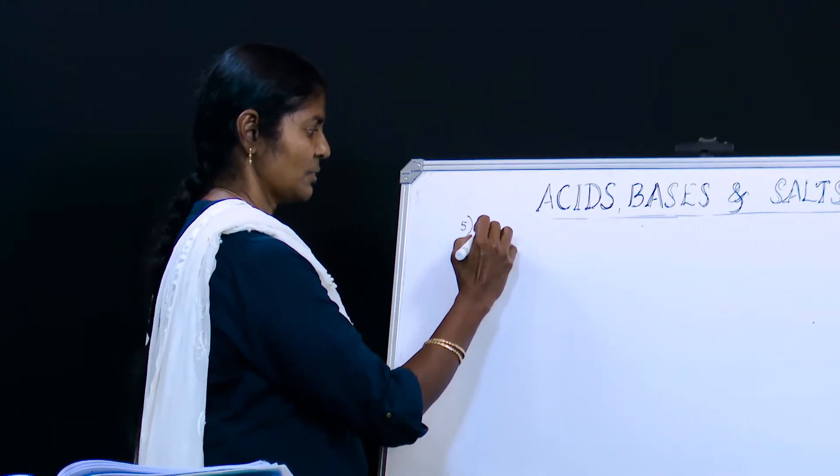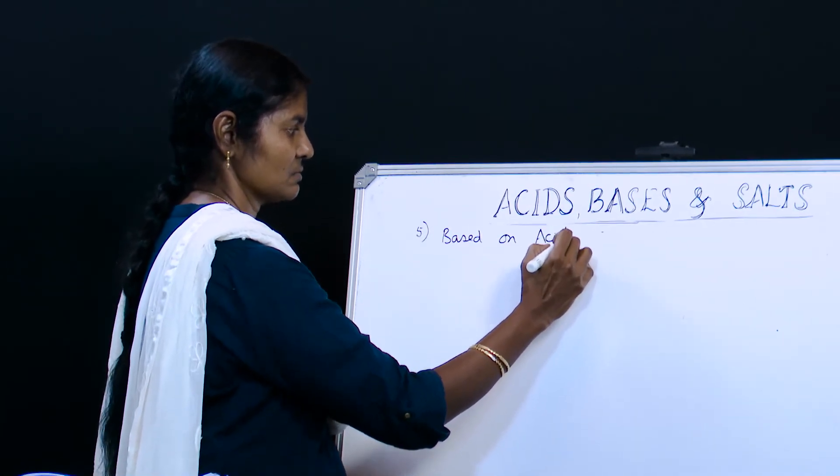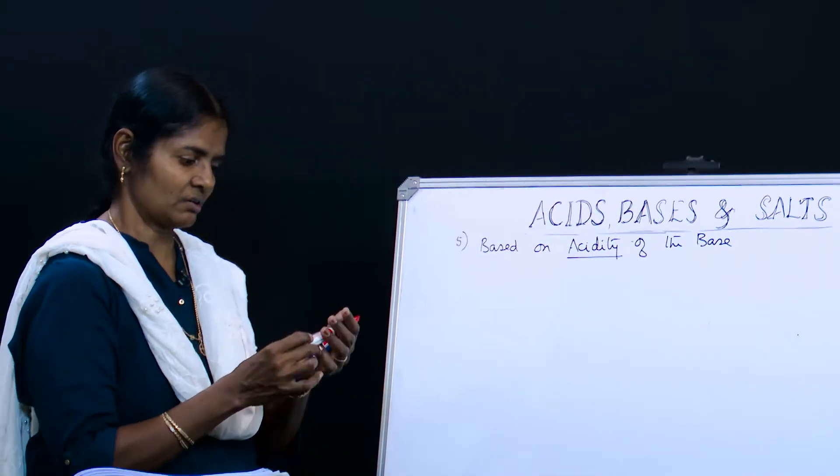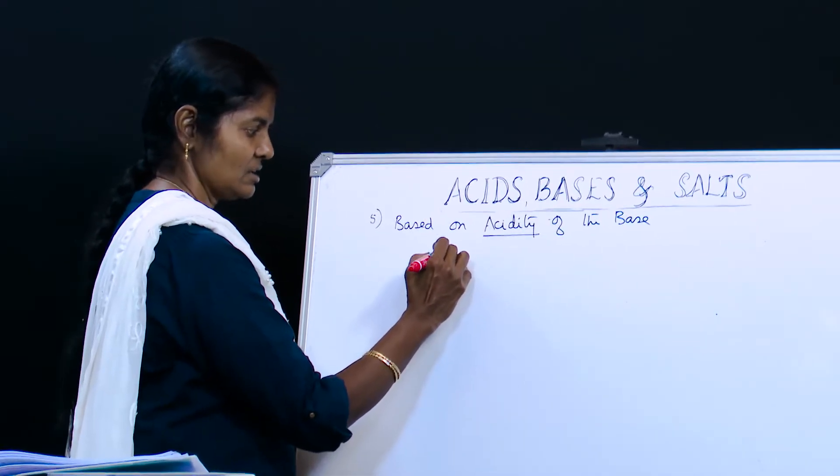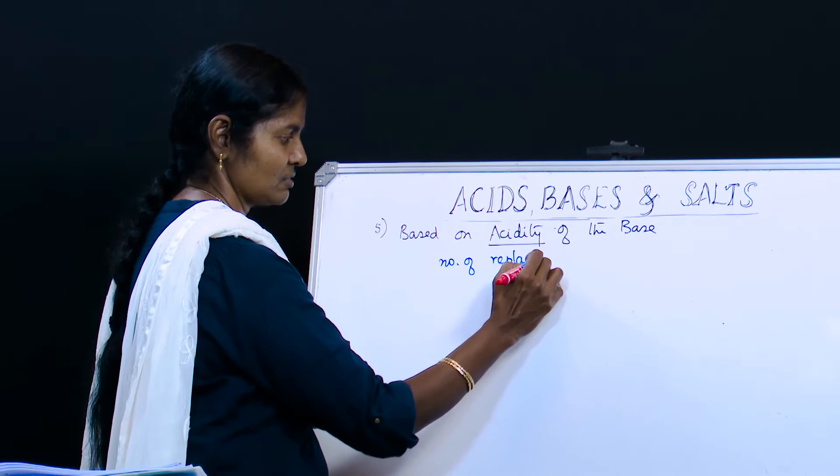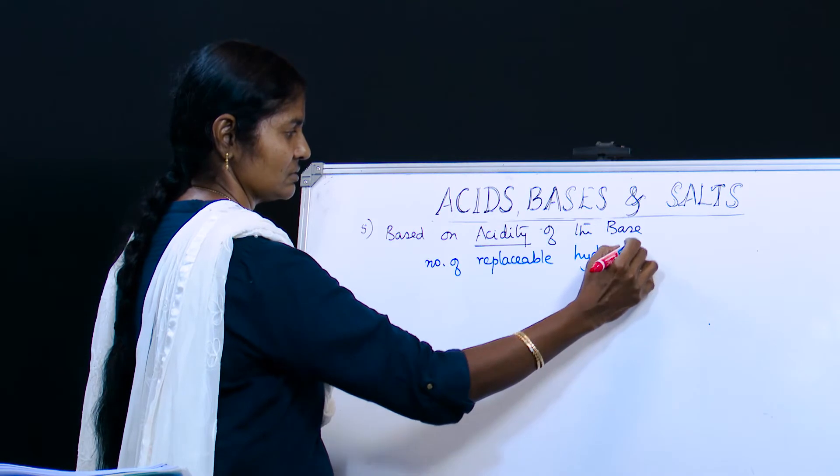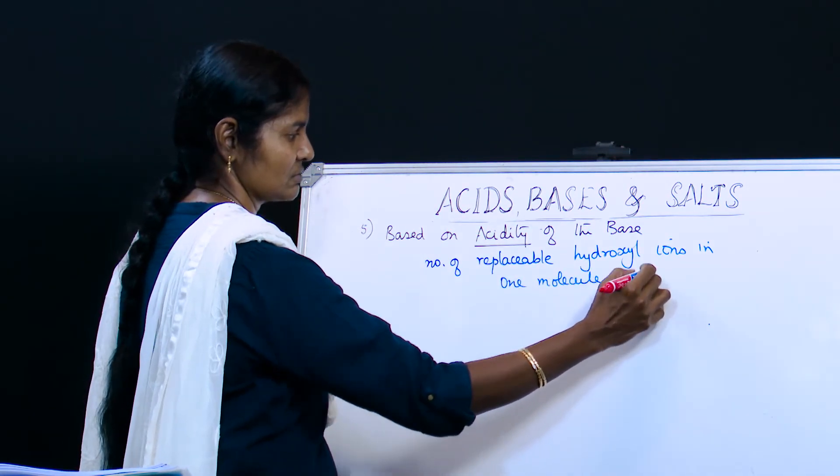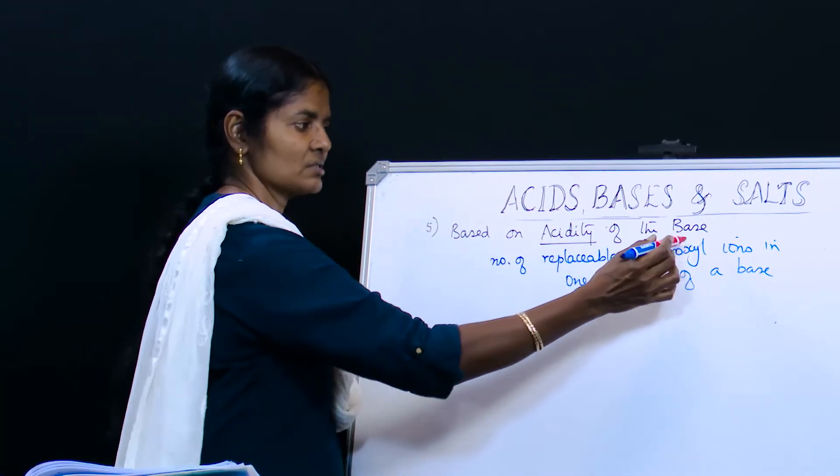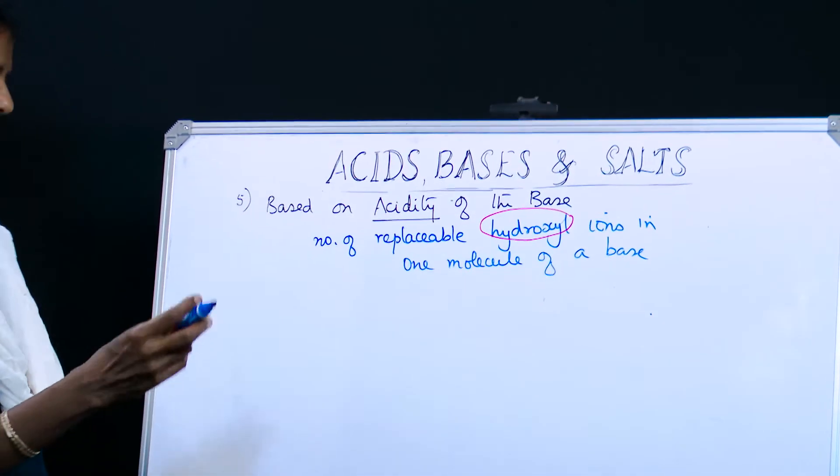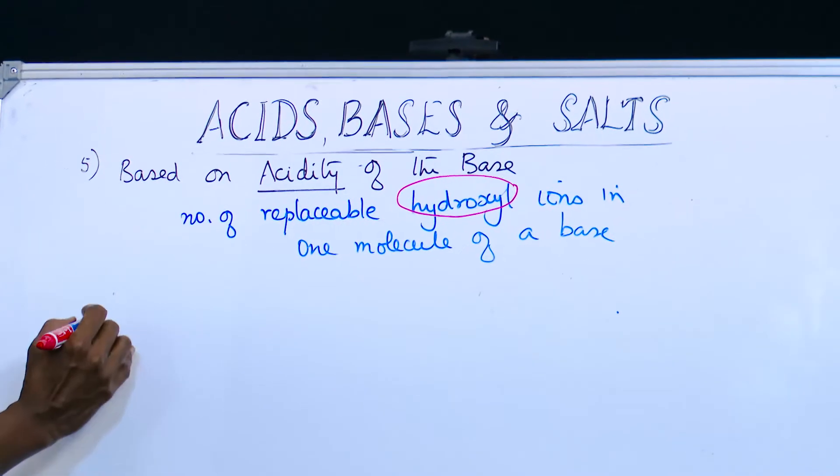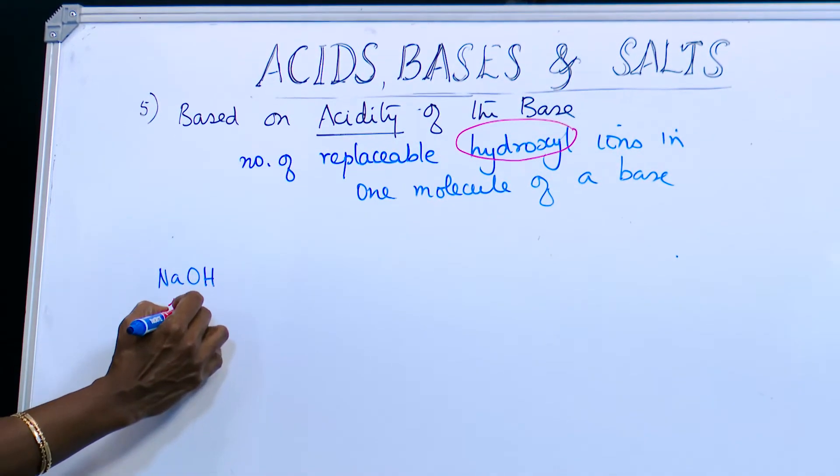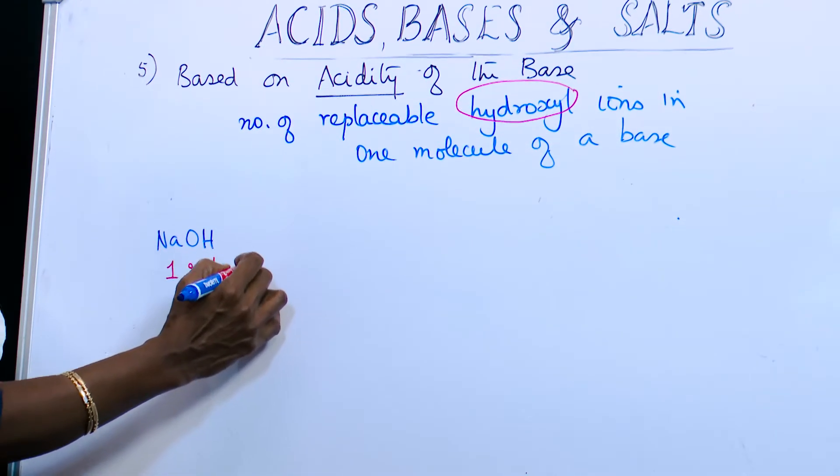The last one is based on acidity of the base. What do you mean by the word acidity? Just like we defined basicity for the acid, acidity is the number of replaceable hydroxyl ions in one molecule of a base. So how many hydroxyl ions are there? That decides the acidity of the base.